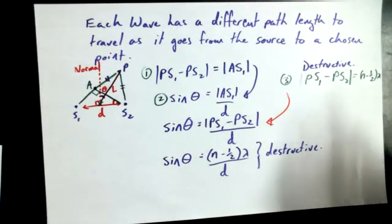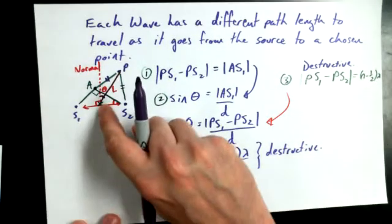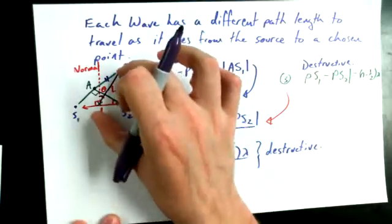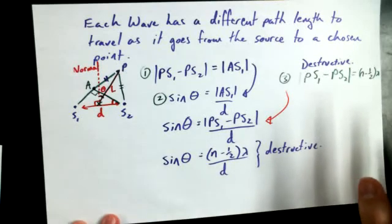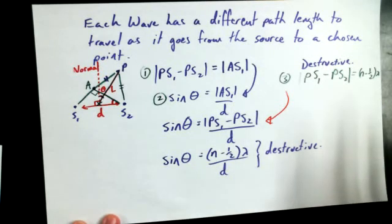So if we know the wavelength, if we know the angle between this point, the line that is defined by these two points and the normal and if we know the separation, we should be able to figure out whether destructive interference is going to happen at a particular point.